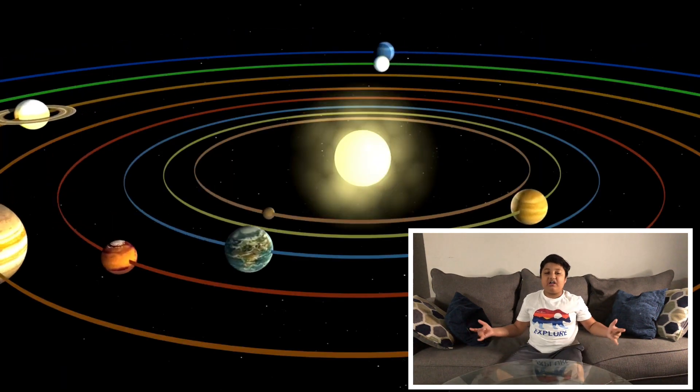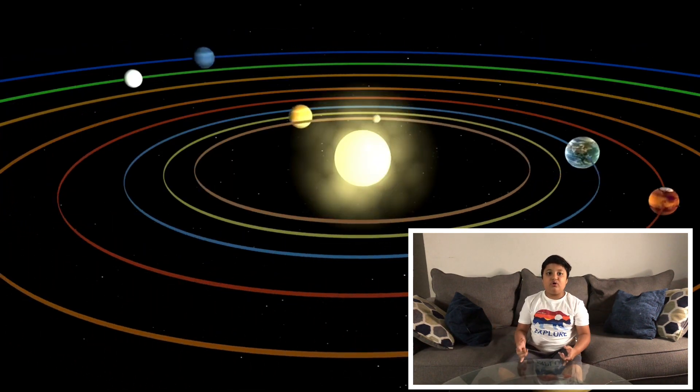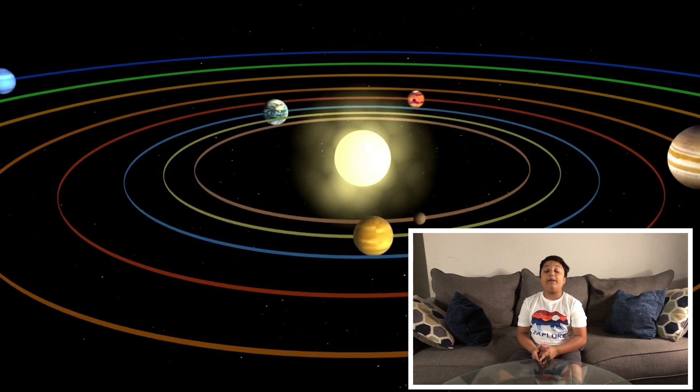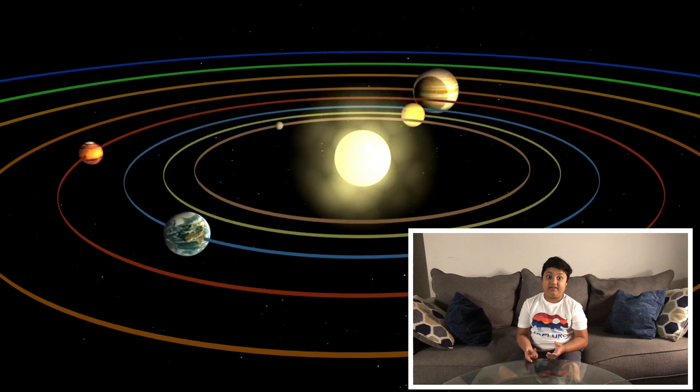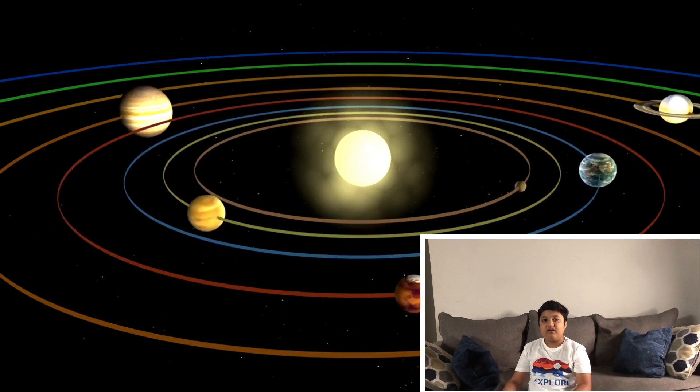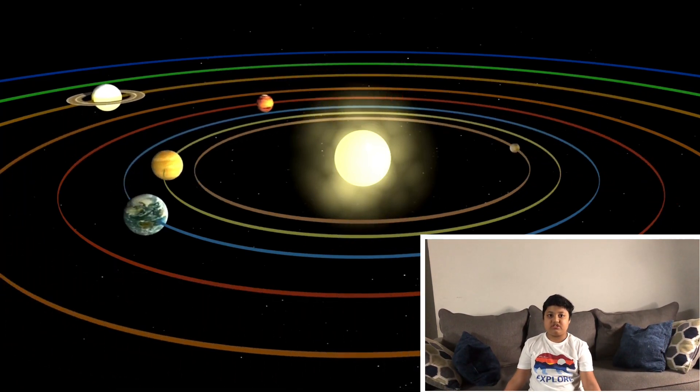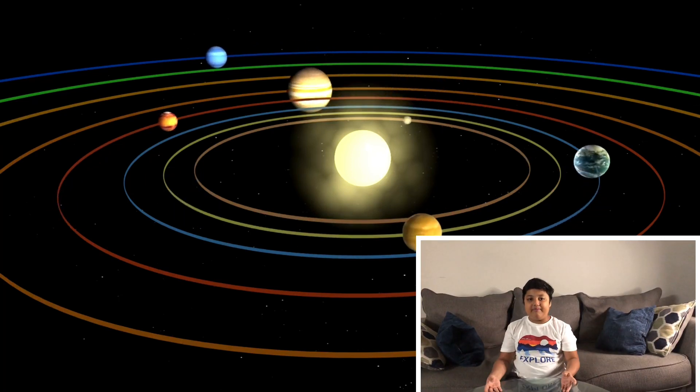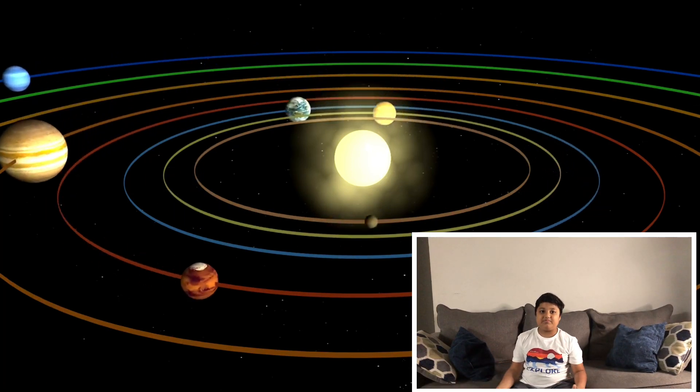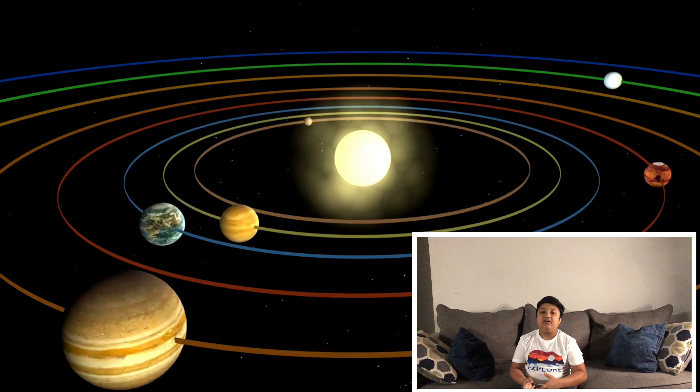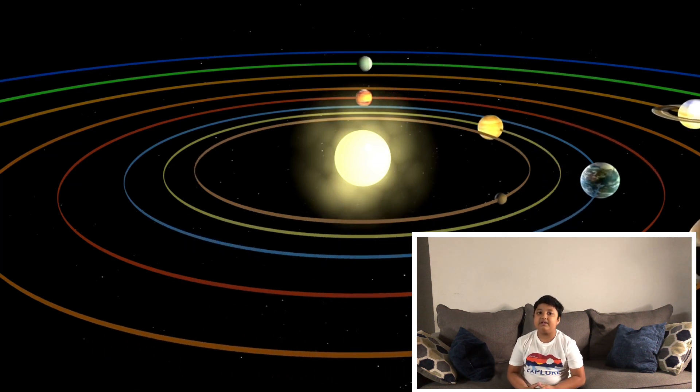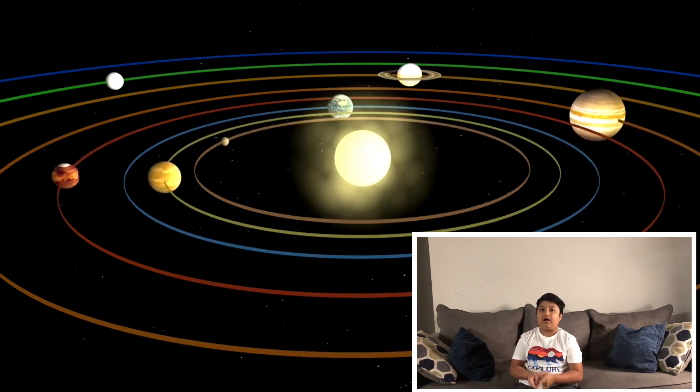If the Sun was a giant jar, you could fit more than 1 million Earths into it. The Sun holds the solar system together. Its gravity is what keeps the Earth and the outer planets circling around the Sun.